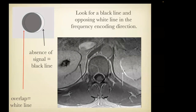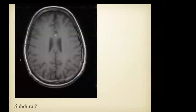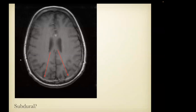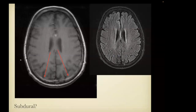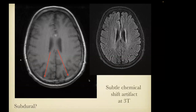Chemical shift artifacts will be more apparent at 3 Tesla. Sometimes this is clinically important — on this image you can see what looks like T1-shortening material surrounding the brain between the outer table and the diploic space, resembling a subdural. But if you look on the FLAIR image, there is no corresponding signal abnormality. This is the beauty of MR imaging: when you have multiple pulse sequences you can sort through whether you're looking at something real or an artifact. In this case, this is a chemical shift artifact at 3 Tesla.